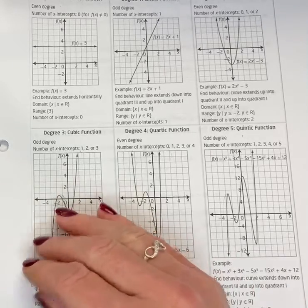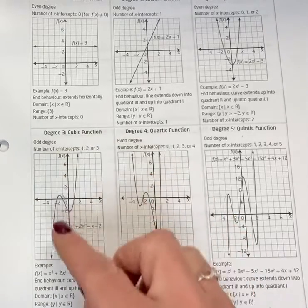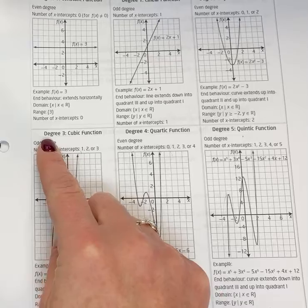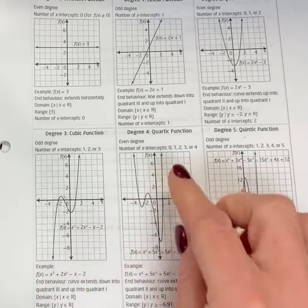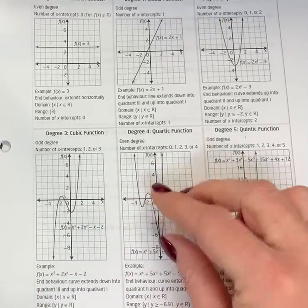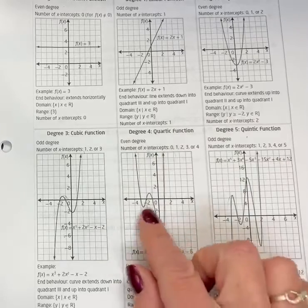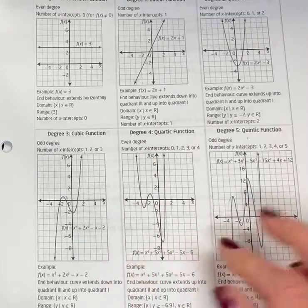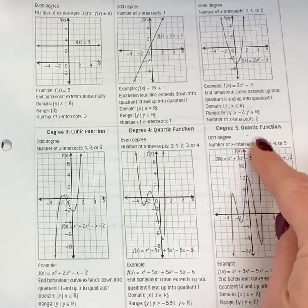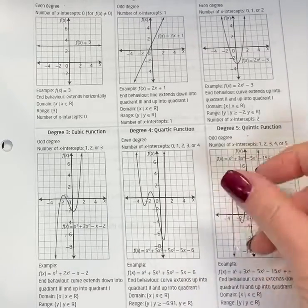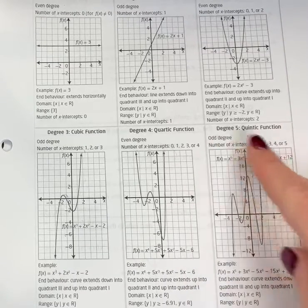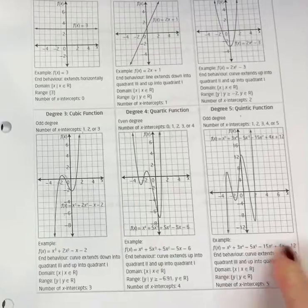This is because in the equation, the a-value is always positive. If there's a negative sign in front of the a-value, then there would be a reflection and the opposite would happen. It would rise left, fall right. If this was a negative equation, then both arrowheads would go down, and we'd say it falls left, falls right. If it was negative, it would be the opposite and would go up on the left, down on the right.